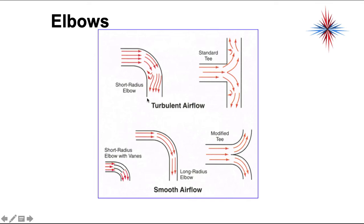When we're looking at elbows, we have the ability to use a short radius elbow. That's a very tight turn, and you notice how the airflow starts becoming turbulent. A long radius elbow, that's a more wide sweeping turn, allows the airflow to continue to be smooth. You can do a short radius if you put vanes, pieces of metal in here that help direct the air to continue in a straight path.